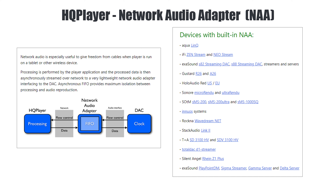There are two ways to run HQ Player currently. One, you can use a USB output from your Rune core, or you can use a Network Audio Adapter, also called an NAA. These are the list of devices which support a built-in Network Audio Adapter. Currently we will be using the Gustard R26 DAC. What this does is control HQ Player and Rune over a Network Audio Adapter and sends your audio to the DAC directly, without having your PC or laptop in between.